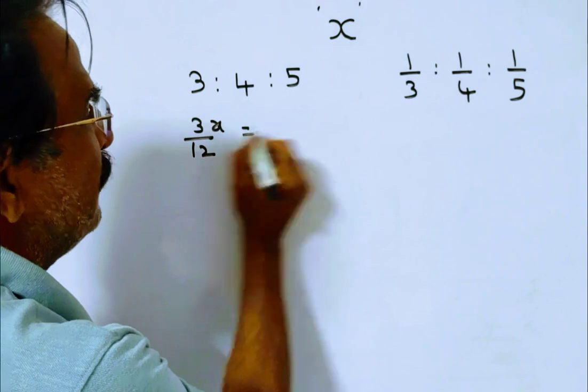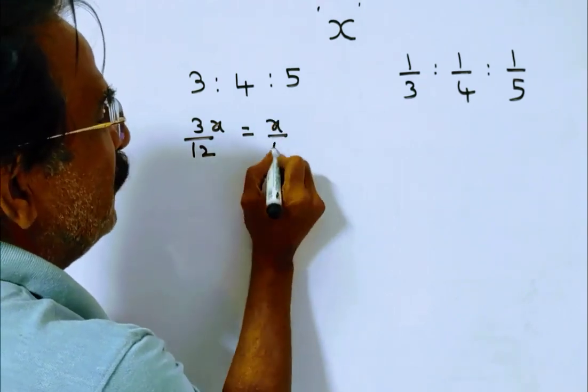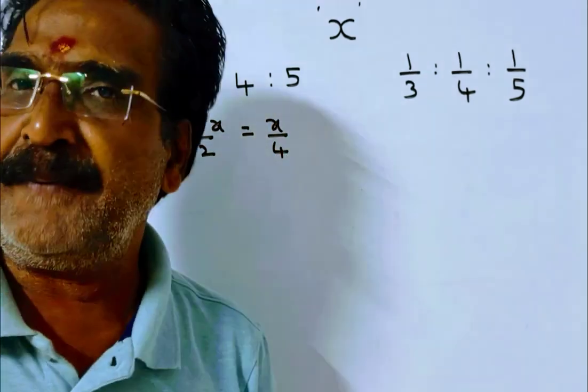So 3x by 12, that is equal to 3 by 4. So the lowest person gets x by 4.